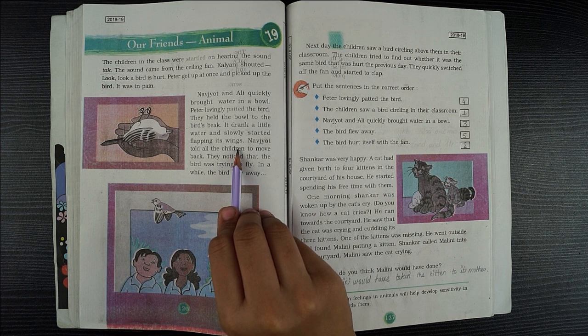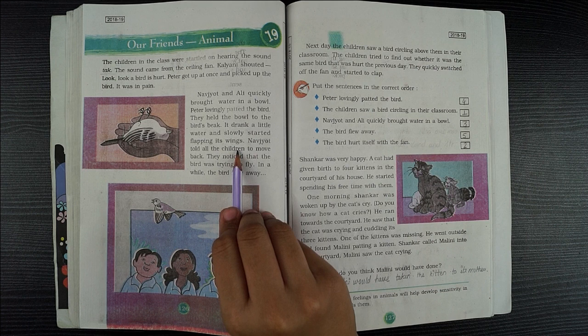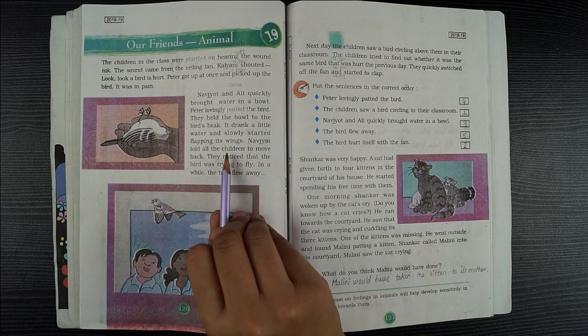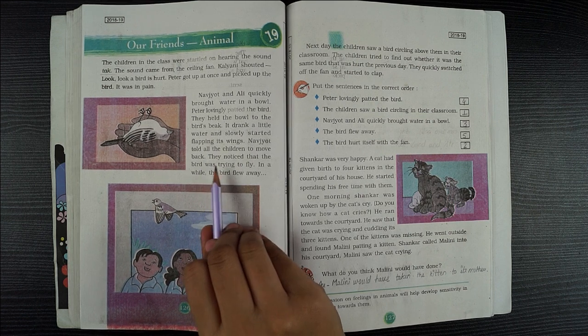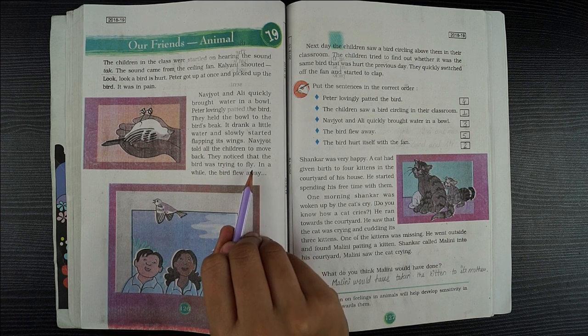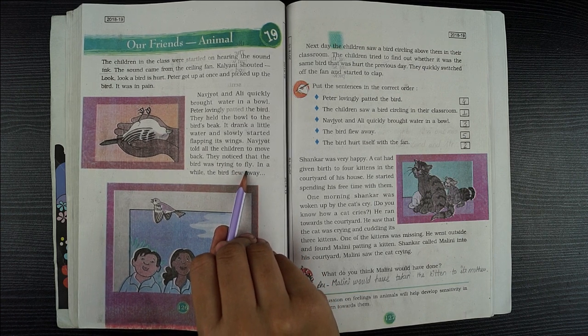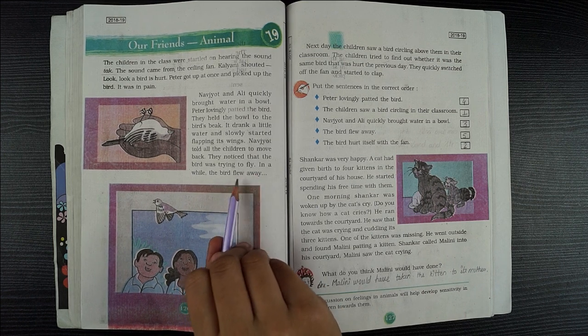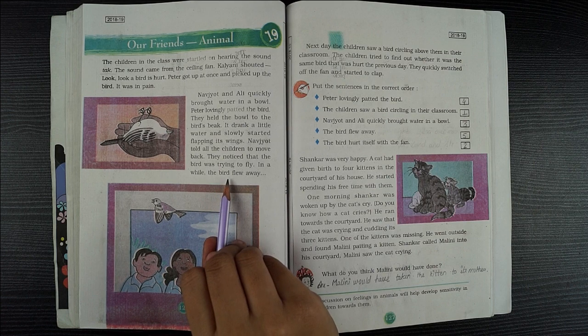Najood told all the children to move back. They noticed that the bird was trying to fly. In a while, the bird flew.